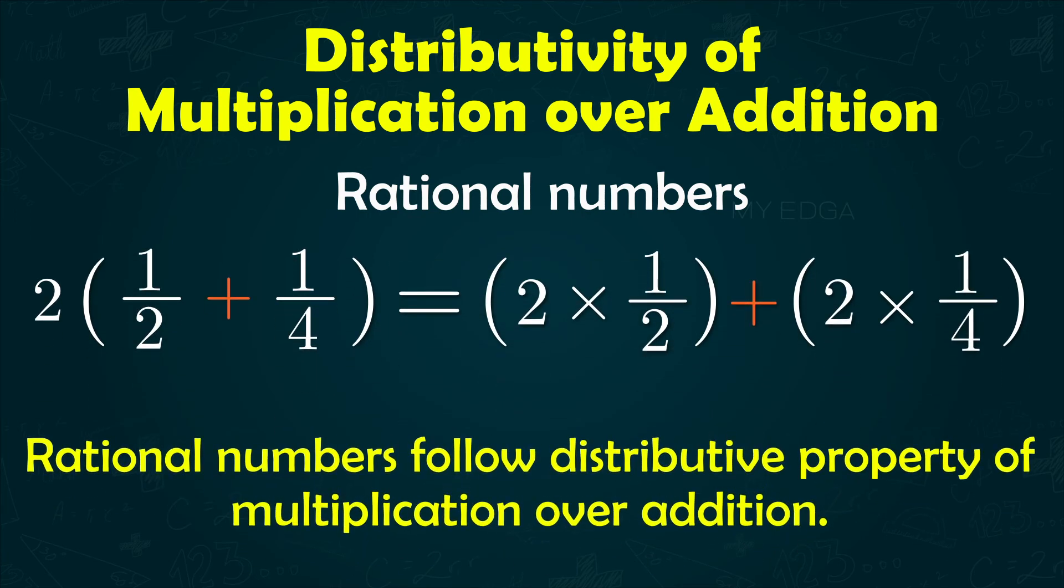Therefore, rational numbers follow the distributive property of multiplication over addition.